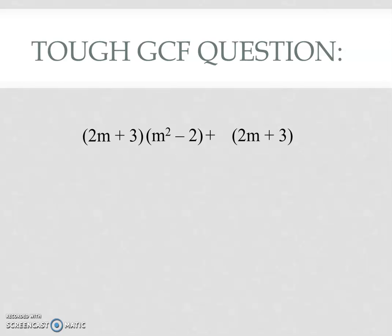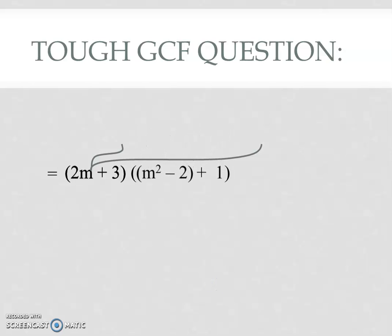Here's another question with a common factor of 2m plus 3. The second part doesn't seem to have a second factor, however, you've got to remember that there's always a common factor of 1. So my (2m plus 3)'s are going to move out in the front, but you have to leave a 1 behind in that second term. 2m plus 3 goes in the front, the leftovers go into the bracket, and then we remove that inside bracket just like before.